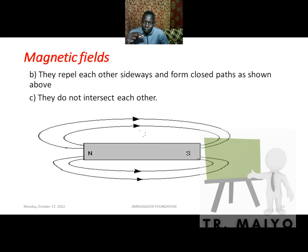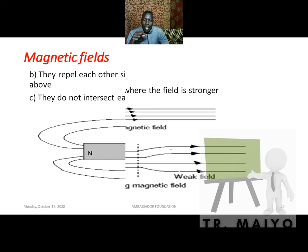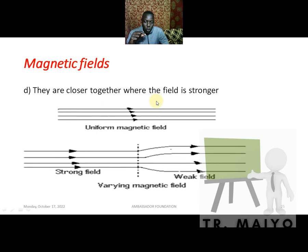Another property: magnetic field lines repel each other sideways and form closed paths, as shown. They repel each other, which leads to another property — they do not intersect each other. In simple terms, they do not cross each other.